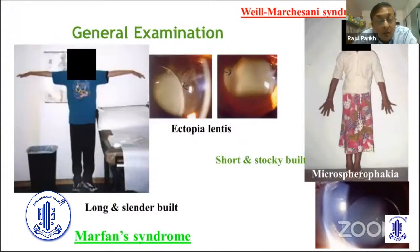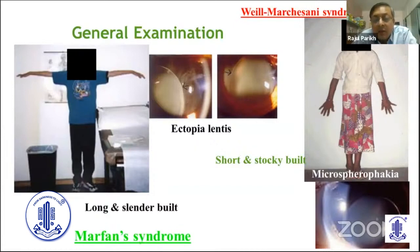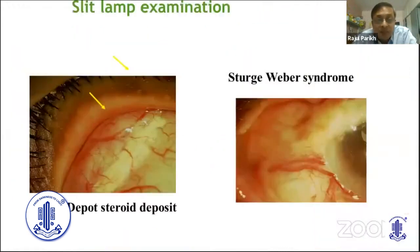The general examination is also important — for example, patients having a long slender build may be marfanoid, while a short, stubby, well-massaged build has very typical ocular features and may have secondary glaucoma. So this gives us a fair amount of idea about what we need to look for in individual patients. Then we go to the slit-lamp examination.